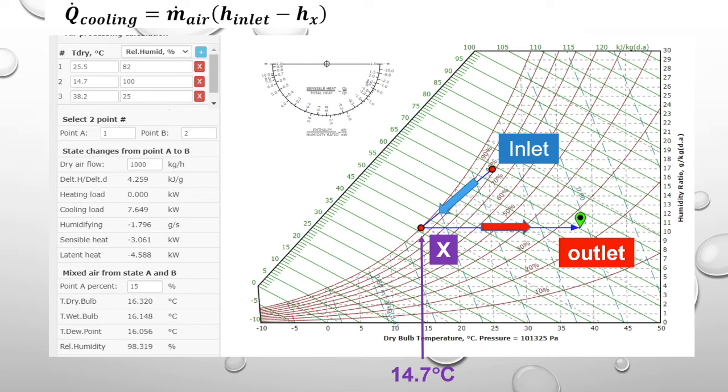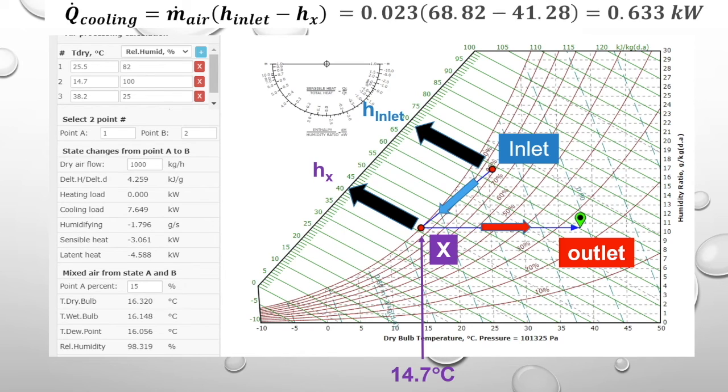From the psychrometric chart, we can tell that the inlet has an enthalpy of 68.82 kJ per kilogram, and state x has an enthalpy of 41.28 kJ per kilogram. Therefore, the cooling capacity here is about 0.633 kW.